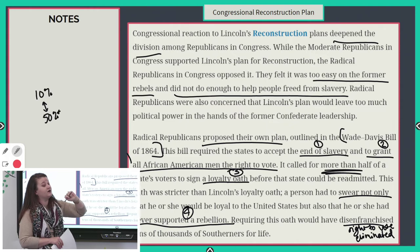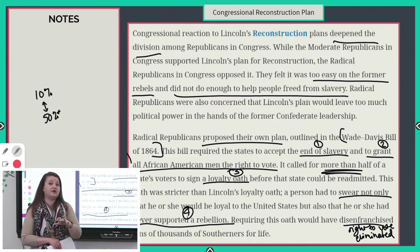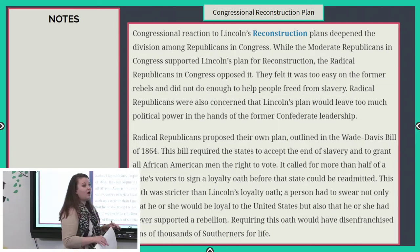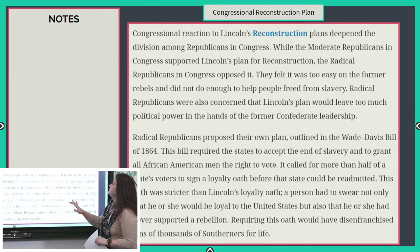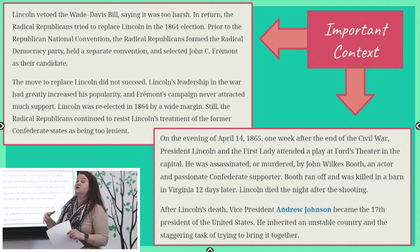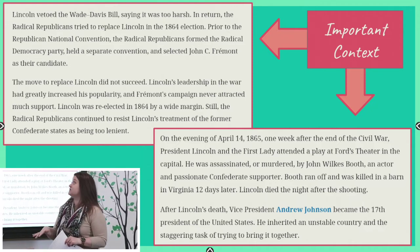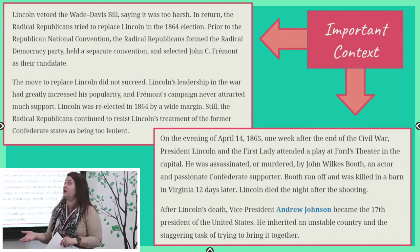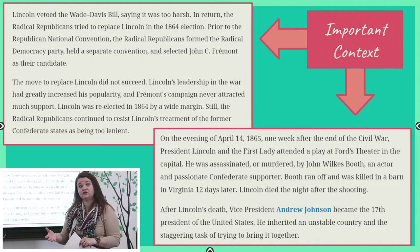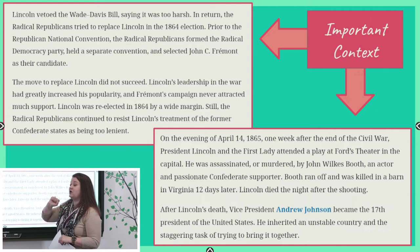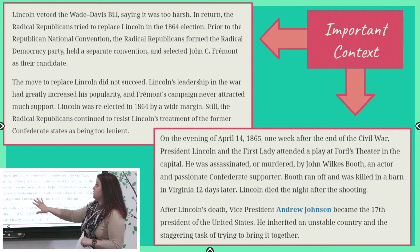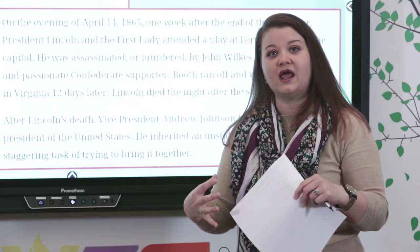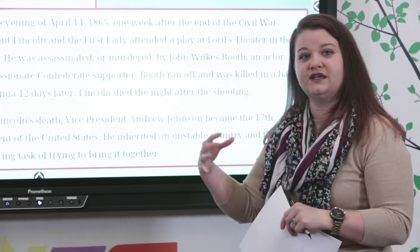Congress didn't like Lincoln's plan — or at least part of Congress didn't. Congress put forward Wade-Davis and Lincoln vetoed it. In return, the Radical Republicans tried to replace him in the 1864 election. They didn't succeed — he was reelected because his popularity had greatly increased due to his leadership during the Civil War. So there was still this push and pull and negative feeling in Congress and between the executive and legislative branches.